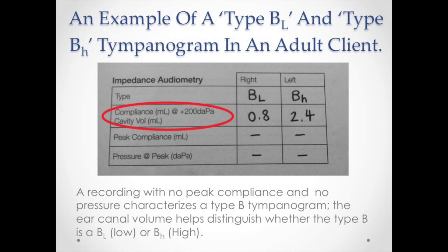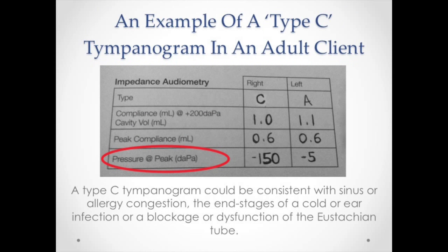A type B low tympanogram suggests middle ear effusion, while a type B high suggests a perforation in the tympanic membrane or patent grommets. A type C tympanogram indicates negative air pressure in the middle ear, which can be consistent with sinus or allergy congestion, the end stages of a cold or ear infection, or a blockage or dysfunction of the eustachian tube.